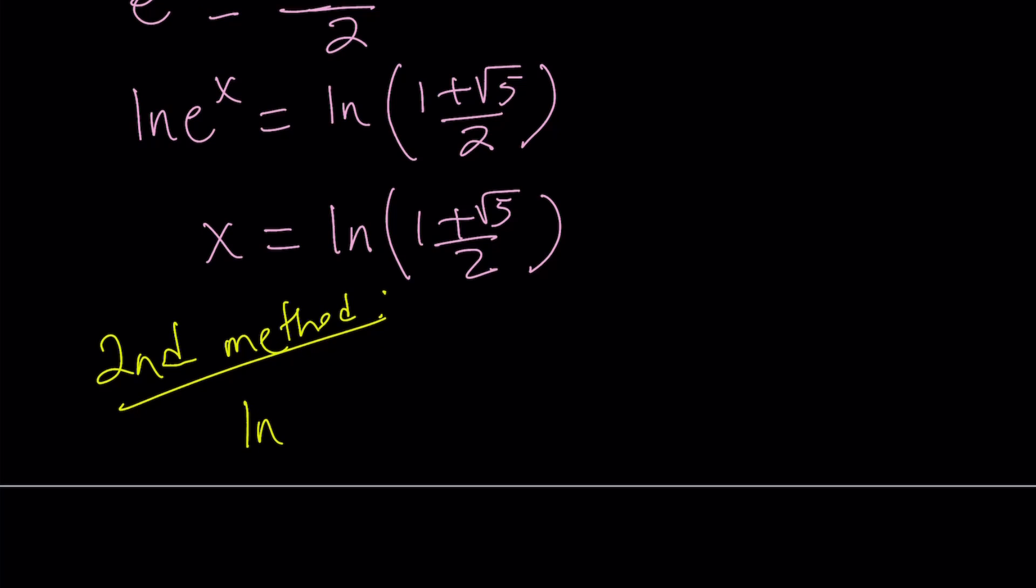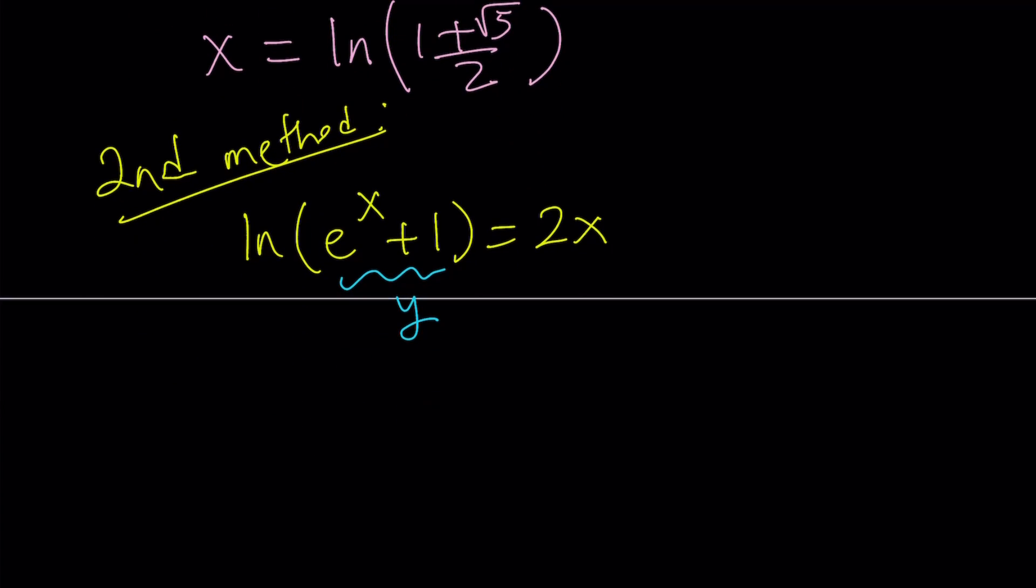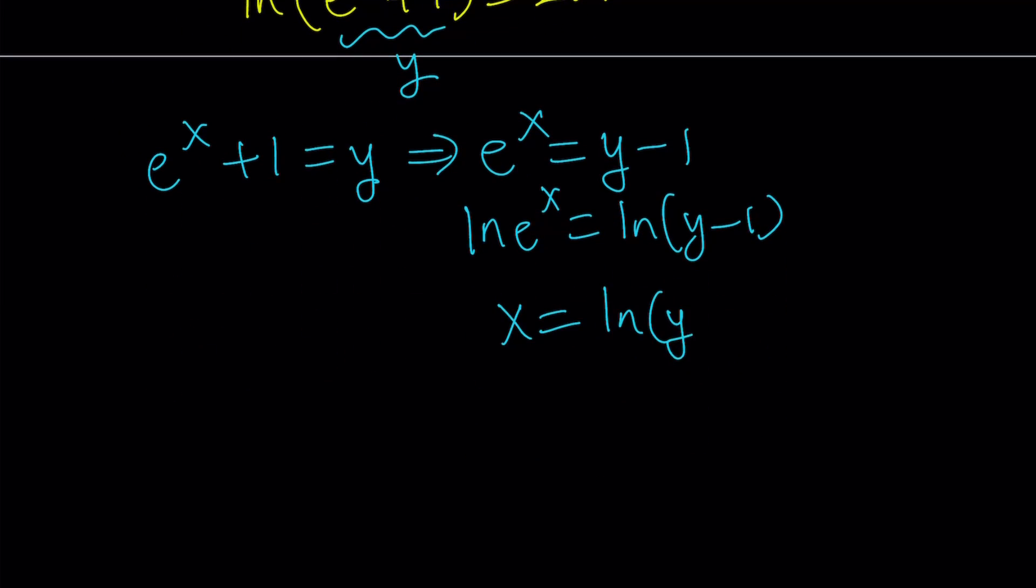My second method is very similar to the first one, except I'm using a little substitution here. So I have something inside the parentheses. It makes sense if I call that something, like how about y. If you set e^x + 1 equal to y, then from here e^x becomes y - 1. And if you ln both sides, you get ln(e^x) = ln(y - 1). And then from here you get x = ln(y - 1). By the way, ln is the natural log, which is base e. Now notice that you want y values to be greater than 1 because ln is only defined for positive numbers. So y must be greater than 1.